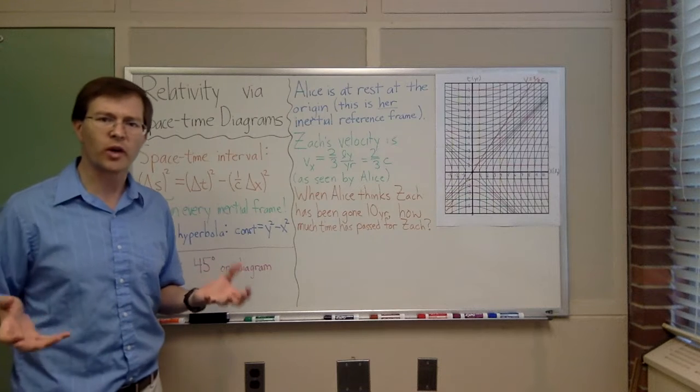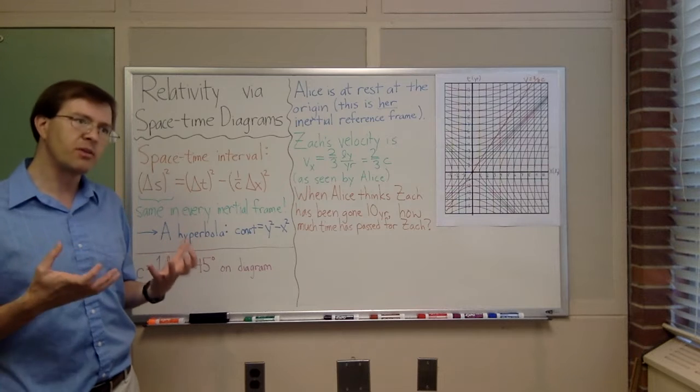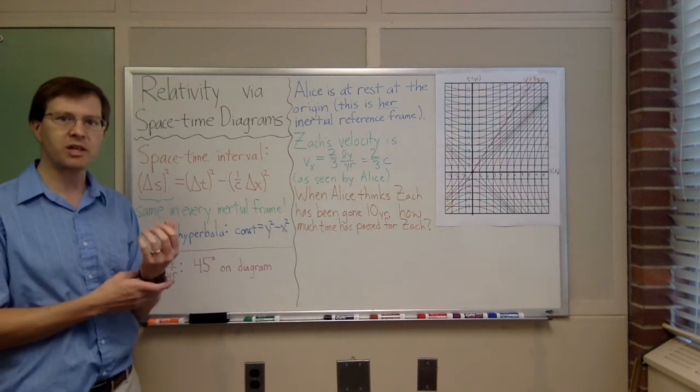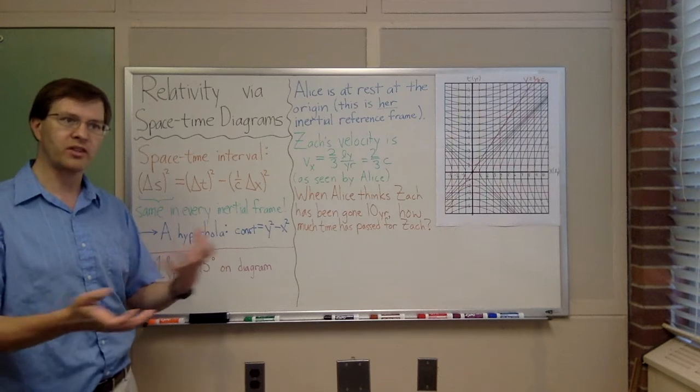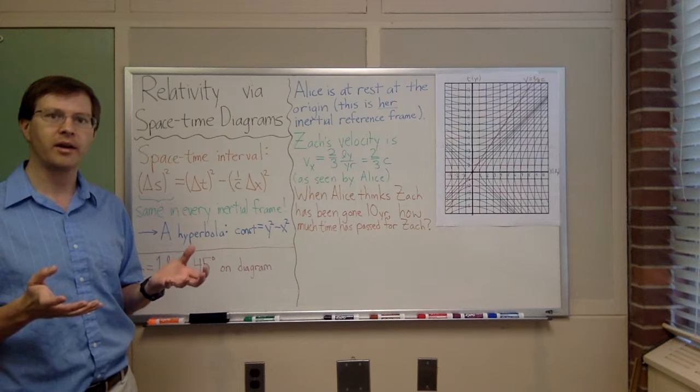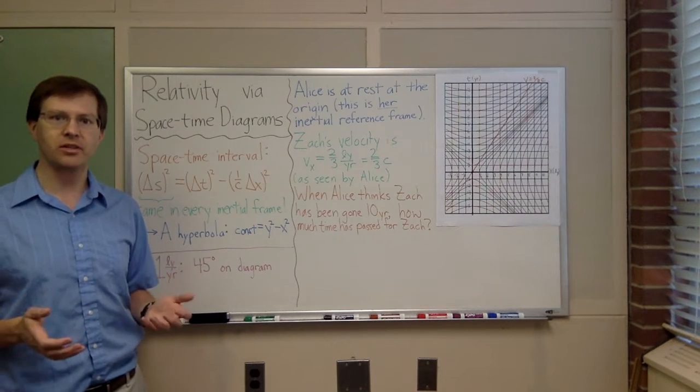Relativity, there are lots of ways of working with it, lots of ways of doing the equations, but fundamentally, on some level, the core concept of relativity is finding the invariants. So many things are relative to which observer you are, relative to your perspective, but there are some invariants that are the same for everyone. And the key invariant for spacetime diagrams is what's called the spacetime interval.